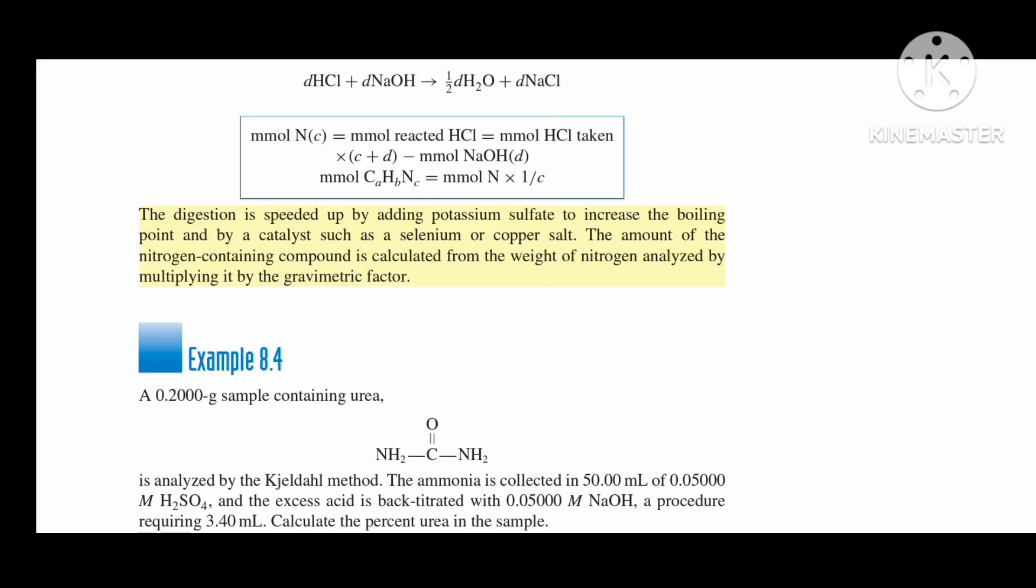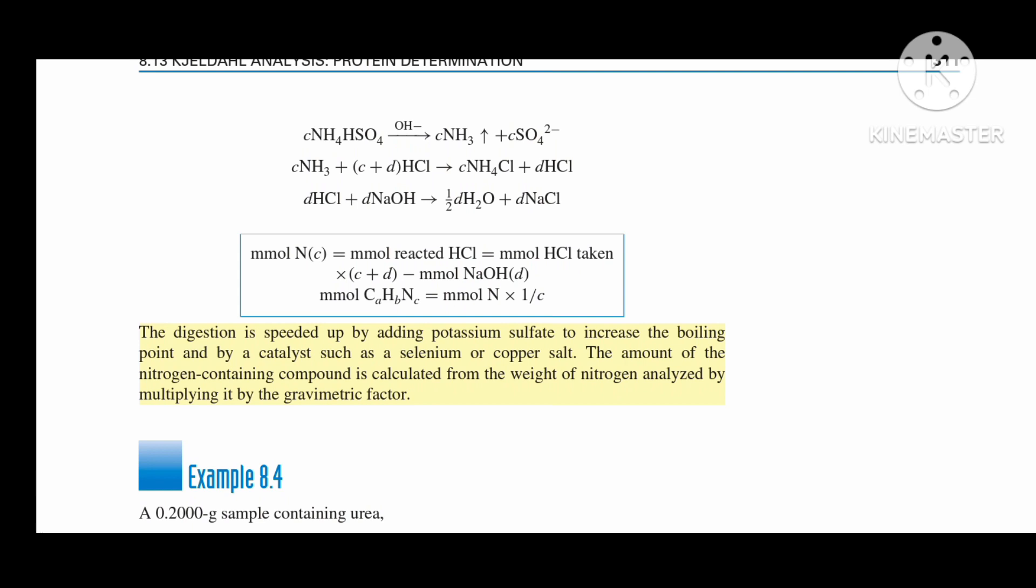The digestion is speeded up by adding potassium sulfate to increase the boiling point and by a catalyst such as selenium or copper salt. The amount of the nitrogen-containing compound